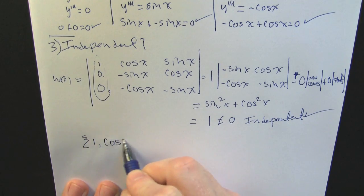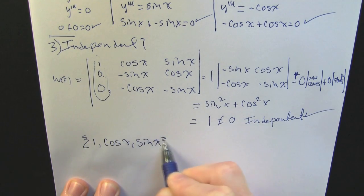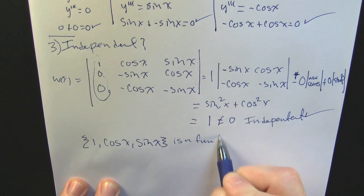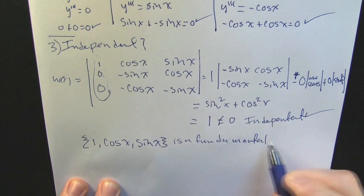Now he's rewriting it in a nice little summary. He says the set {1, cosine, sine} is a fundamental solution set.